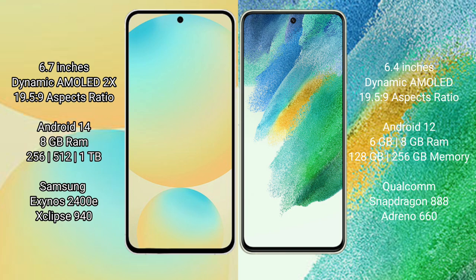The Samsung Galaxy S24 Ultra runs on the Android 14 operating system, while the Samsung Galaxy S21 Ultra runs on the Android 12 operating system.